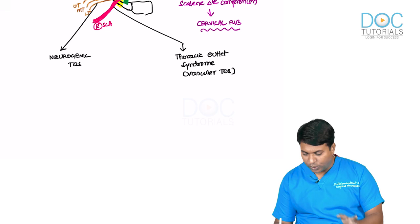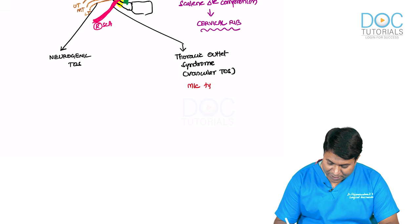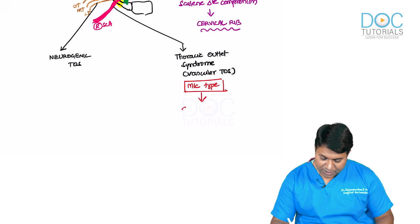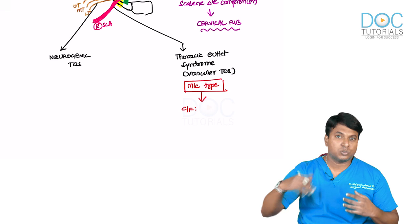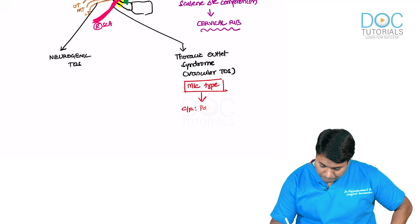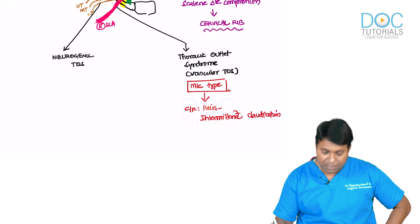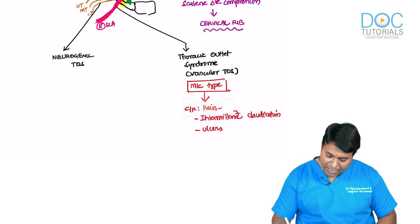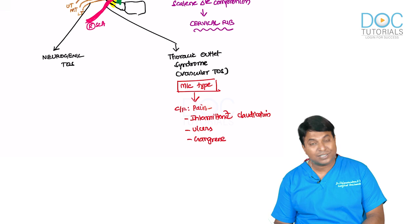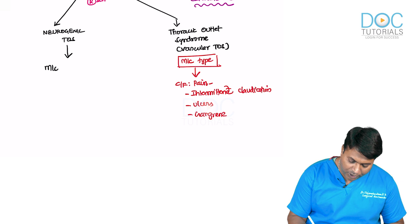The most common type in cervical rib is vascular thoracic outlet syndrome, where the subclavian artery is compressed. The patient gets pain on using their hands — intermittent claudication of the upper limb due to poor blood flow. Ulcers in the hand and gangrene of the digits can also occur. These are features of vascular thoracic outlet syndrome.